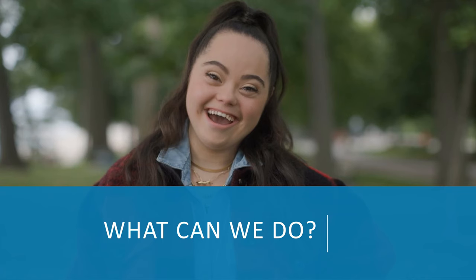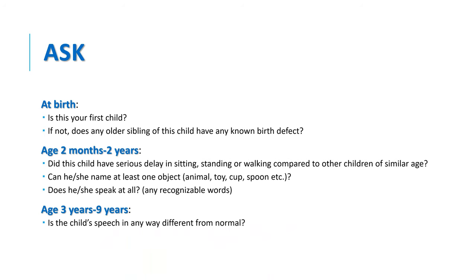What can we do if we are suspecting Down syndrome in a child? At birth, we should ask: is this the first child, and if not, does any older sibling have a known birth defect? From age two months to two years, ask: did the child have serious delay in sitting, standing, or walking? Can they name at least one object? Do they speak any recognizable words? From three to nine years, ask whether the child's speech is different from children of similar age.